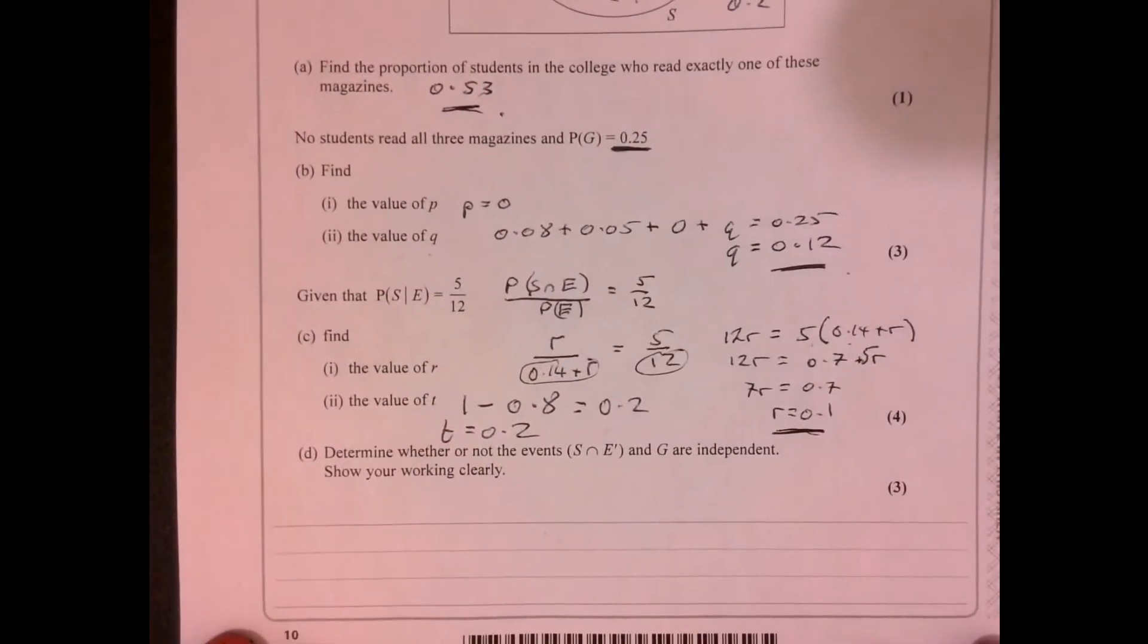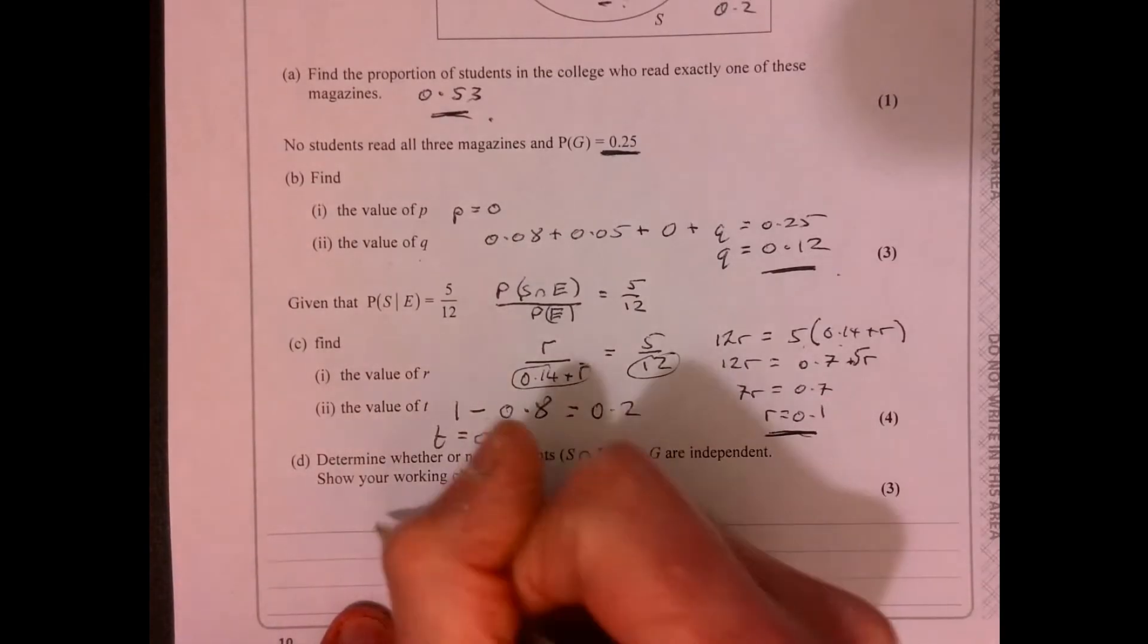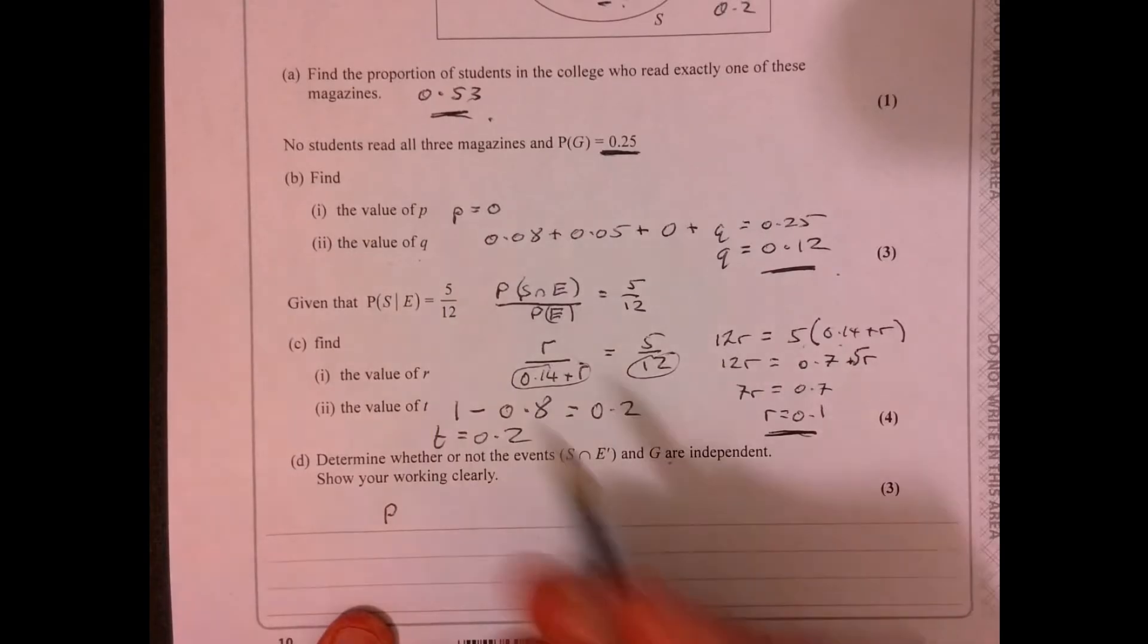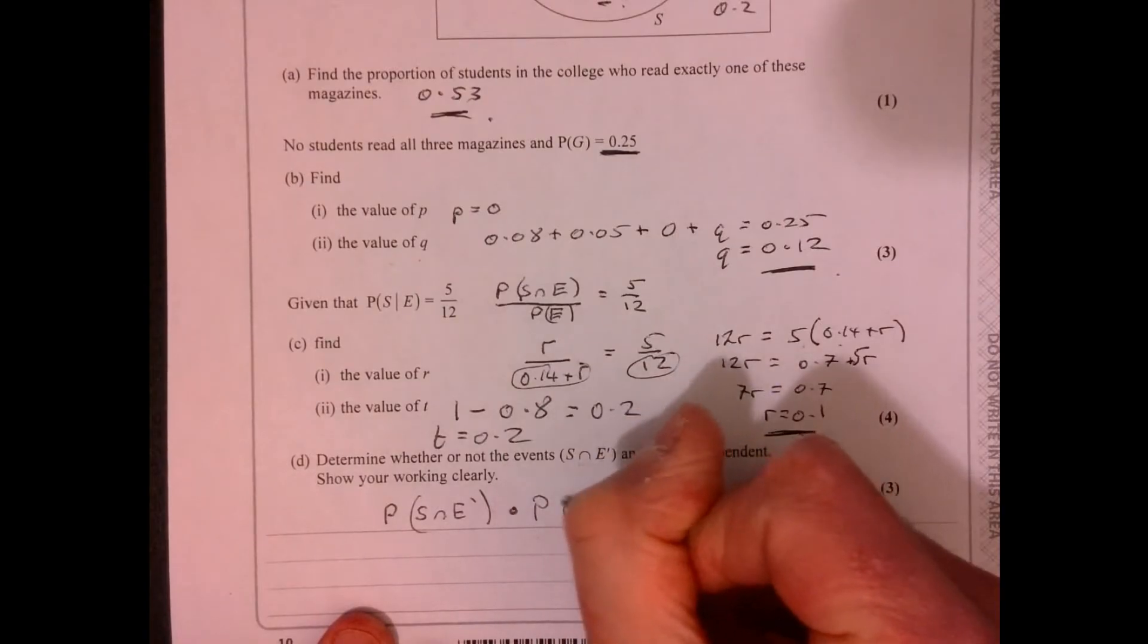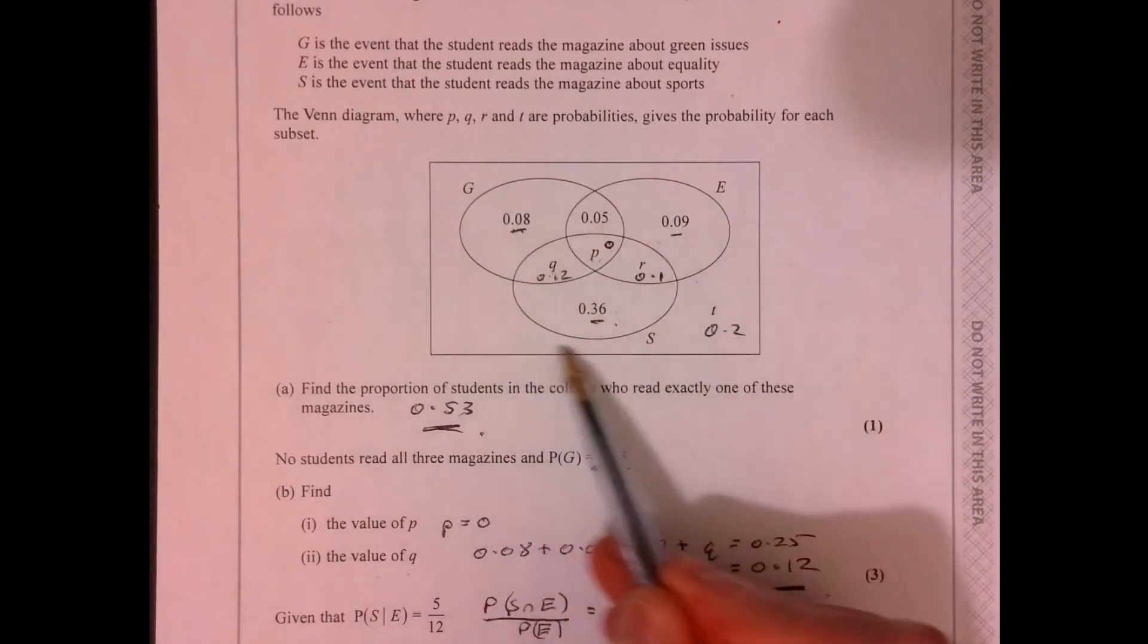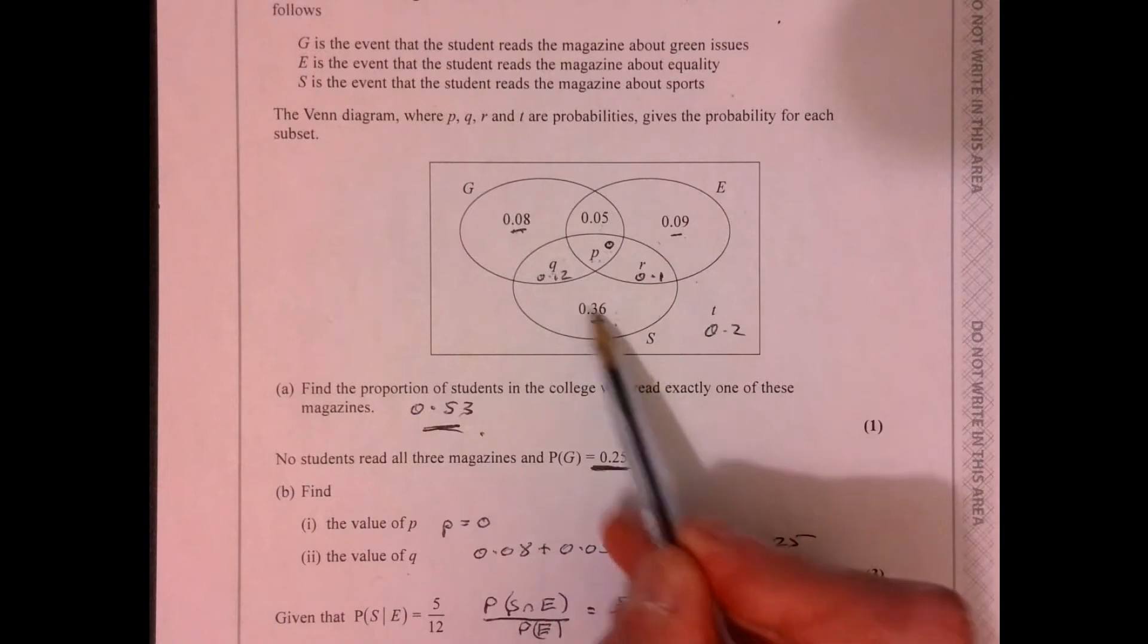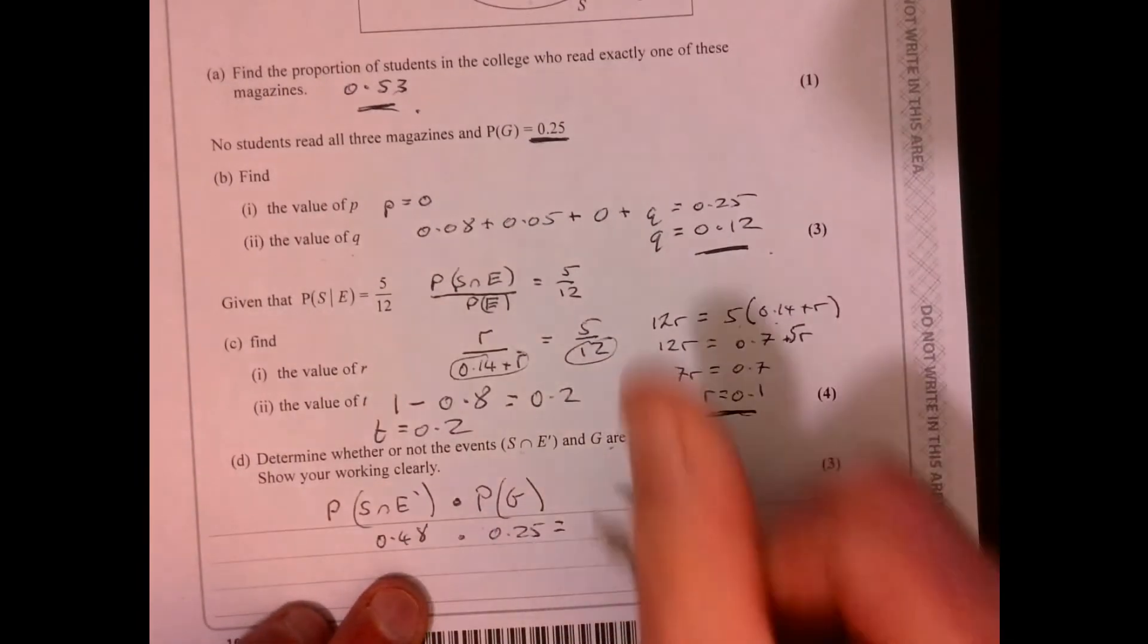Now, now's a bit that people tend to get a little bit confused about. It says determine whether or not the events S intersection not E and G are independent. Well, let's work out first of all, if they were independent, therefore we could multiply these two things together. So the probability S intersection not E and multiply that by the probability of G. So if I do that, this one is 0.48. Let's just have a quick look at the diagram just to make sure that we understand where that's coming from. So it's S, whatever's in S, that's not in E. It's the intersection of those two things. So it's those two bits there. The probability of G is just that bit there. So we're going to multiply that by 0.25. If we do that, that gives us 0.12.